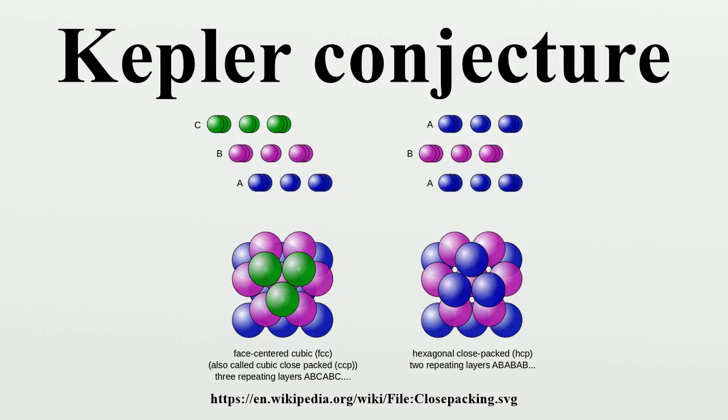It says that no arrangement of equally sized spheres filling space has a greater average density than that of the cubic close packing and hexagonal close packing arrangements. The density of these arrangements is around 74.04%. In 1998 Thomas Hales, following an approach suggested by Fehersthoff, announced that he had a proof of the Kepler conjecture.